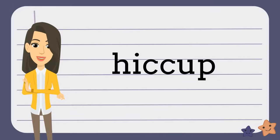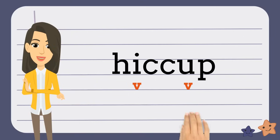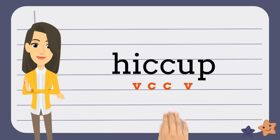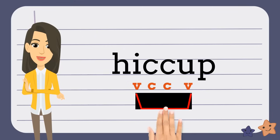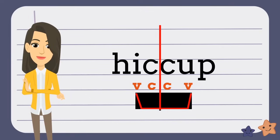Let's take a look at this word. The first thing you're going to need to do is find the vowels. So in this word, the vowels are I and U. Next, find the consonants between the vowels. Then bridge the vowels. Finally, draw a line between the consonants. Now the word is broken up.